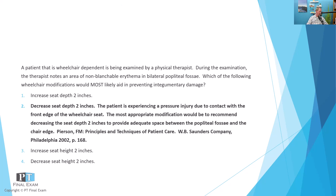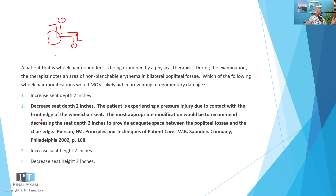This is a good reason to check out the PT Final Exam YouTube channel where we'll have this posted with a visual. As your patient sits in the wheelchair, you want space between the front edge of the wheelchair seat and the back of the knees. If the seat depth is too deep, the patient has to slouch to reach the edge of the seat and gets excessive contact in the popliteal fossae. To remedy this, you shorten the seat depth — typically by two inches — to prevent contact with the front edge of the wheelchair seat.